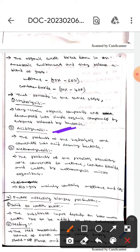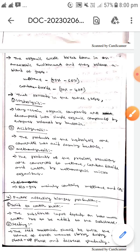The next one is acidogenesis. Here, the products of the hydrolysis are converted into acid forming bacteria.